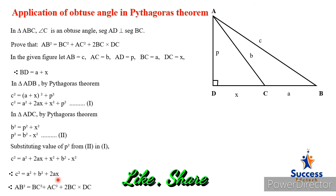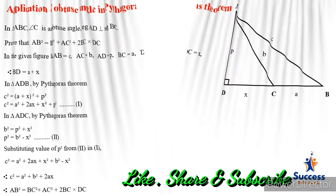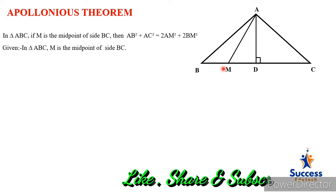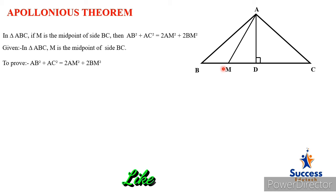These two statements are necessary for Apollonius theorem. Based on these two theorems we are able to solve Apollonius theorem. In triangle ABC, M is the midpoint of BC. We have to prove: AB² + AC² = 2·AM² + 2·BM². For construction, draw AD perpendicular to BC.